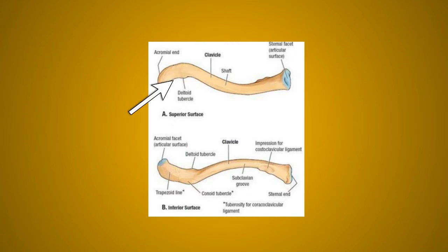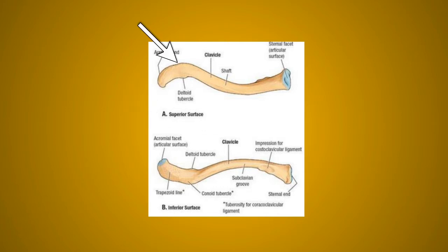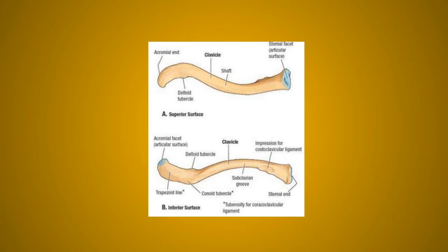The shaft of the clavicle is divided into the lateral one-third and the medial two-third part. The lateral one-third is concave forwards and the medial two-third is convex forwards. The lateral one-third is flattened from above downwards and has two borders: the anterior border, which is concave forwards, and the posterior border, which is convex backward. This part has two surfaces: the superior and the inferior. The superior surface is subcutaneous.